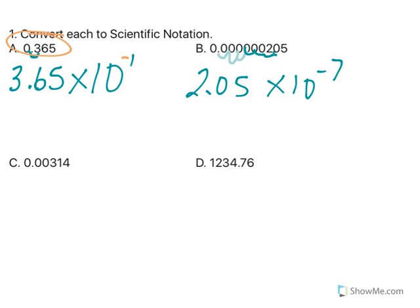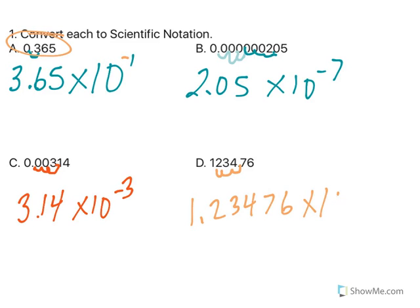In letter C, we have another number less than 1. So if I move it 1, 2, 3 places, I get 3.14 times 10 to the negative 3rd. And it's negative again because my number is less than 1. Now in letter D, 1,234.76, that's greater than 10. So when I move this decimal point, 1.23476, I moved it 3 places, and that number is larger than 10, so my exponent will be positive.